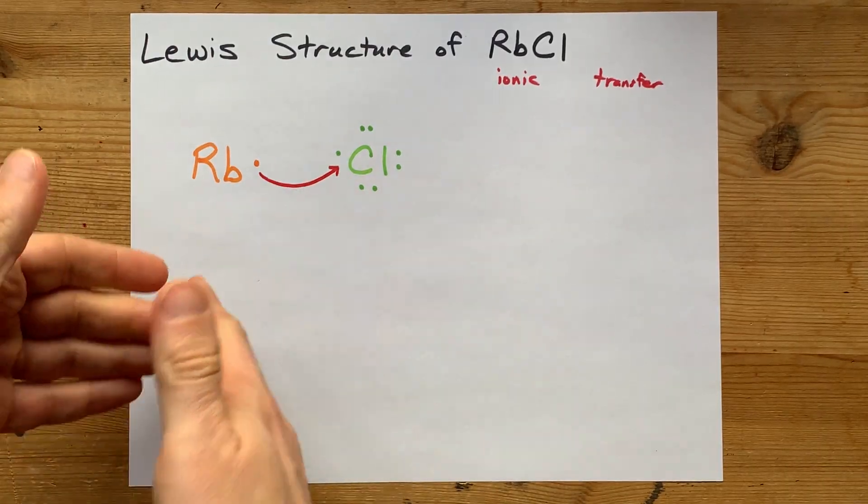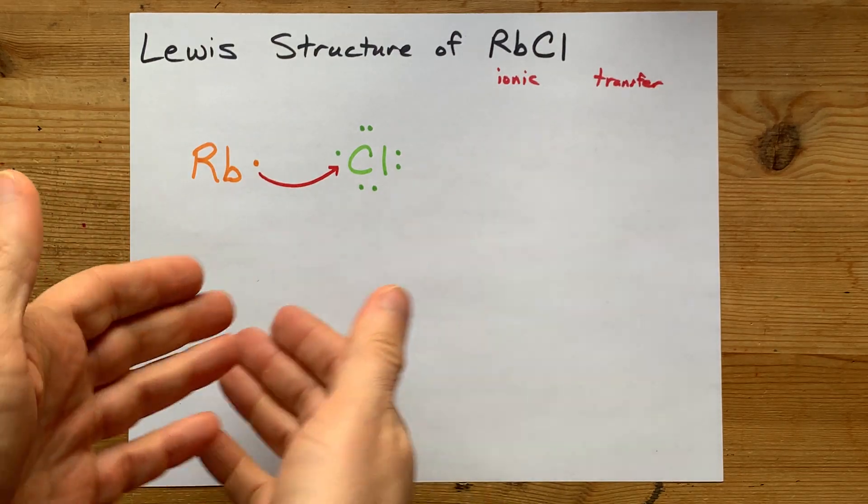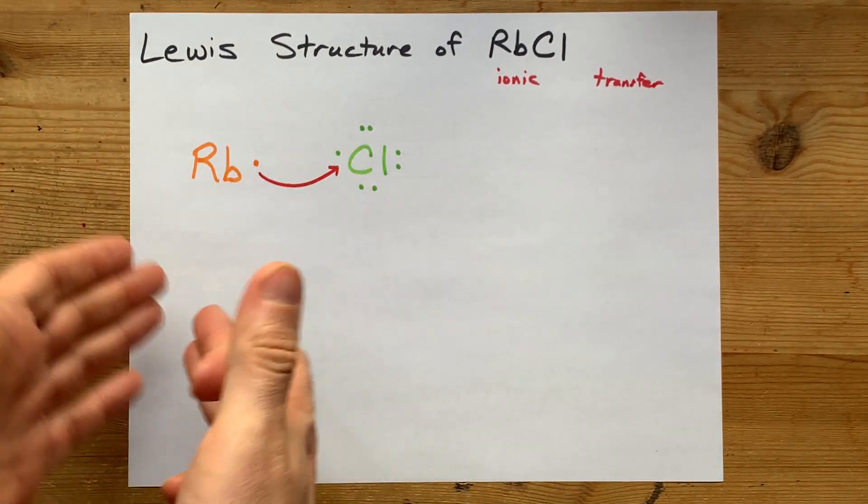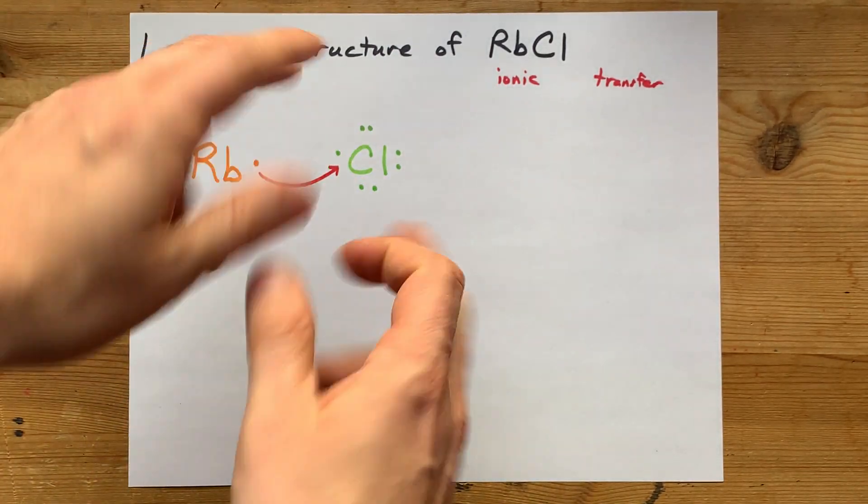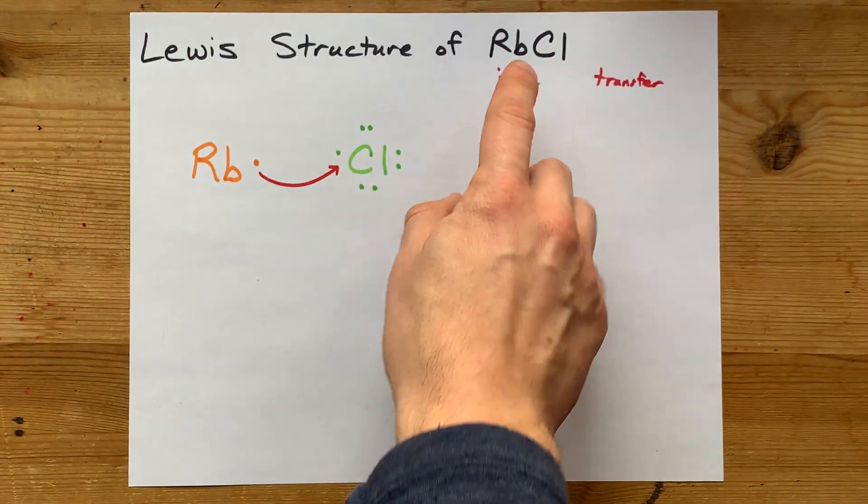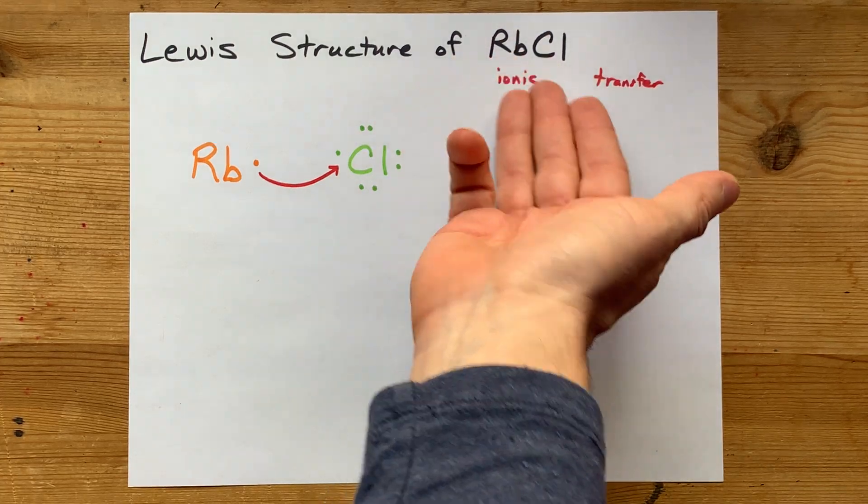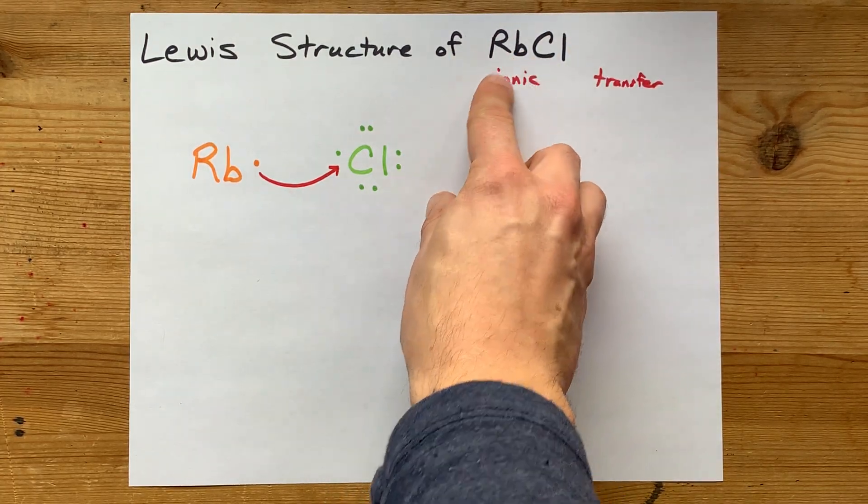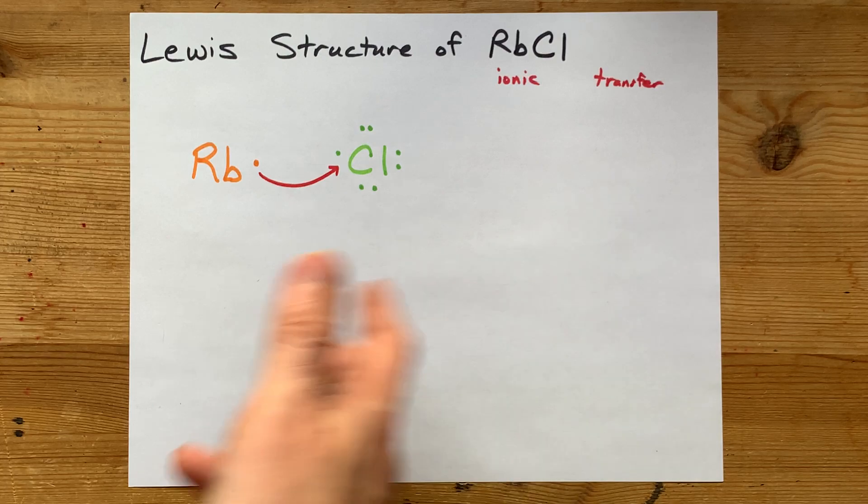Now, if chlorine required two electrons, you'd need two RBs in order to satisfy the CL and give it all the electrons that it wants, but you only need one of each here. In fact, the formula tells you that. There's one RB here and one CL here with no subscripts, so no surprises.